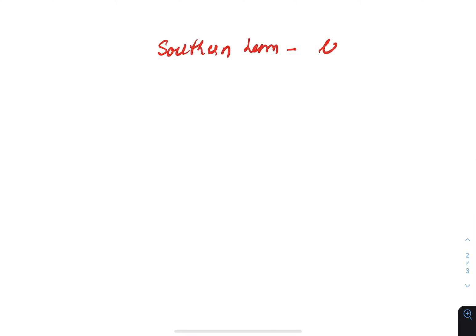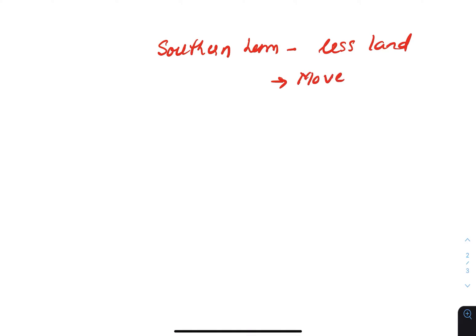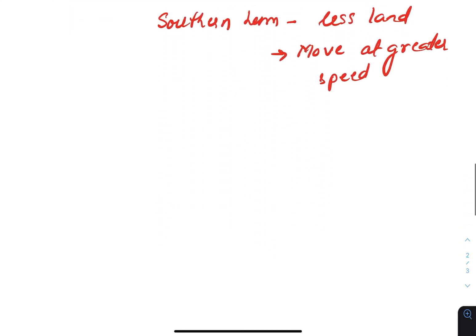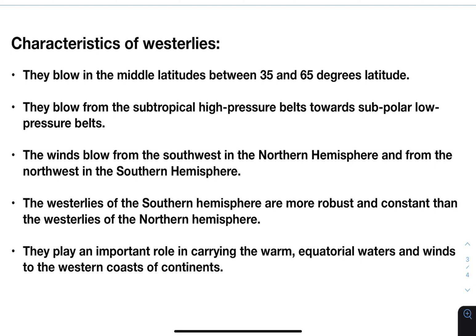When these winds move over land areas, the direction is changed and moves in more of a north-south pattern. This directional change means the westerlies are slowed down significantly over land. The opposite is true over water, where the westerlies may reach higher speeds. This means that the westerly winds tend to move at greater speeds in the Southern Hemisphere, where there is less land area than the Northern Hemisphere.